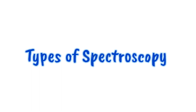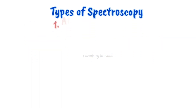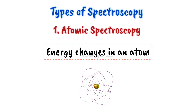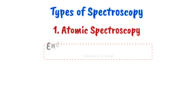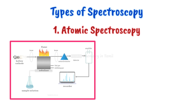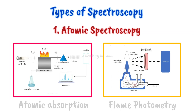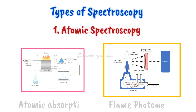Next, we will talk about what types of spectroscopies there are. First one: atomic spectroscopy. This means, in an atom, we will learn how energy changes occur in the atom. For example, atomic absorption spectroscopy and flame photometry. In these two spectroscopies, we learn how energy changes in an atom — how it is absorbed or emitted.